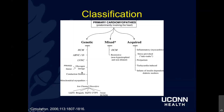Another way to break down the primary cardiomyopathies: you can have genetic cardiomyopathies, which include HCM or hypertrophic cardiomyopathy, arrhythmogenic right ventricular cardiomyopathy, LV non-compaction, and so on. You can have acquired cardiomyopathies - inflammatory, stress-induced, peripartum, tachycardia-induced are the most common - and then a mixed component. Dilated cardiomyopathy broadly is included here because it can often be genetic or acquired, and restrictive cardiomyopathy can fall into this category as well.